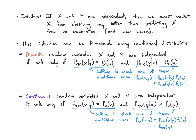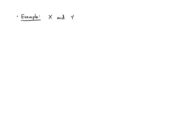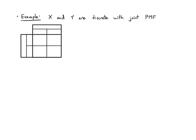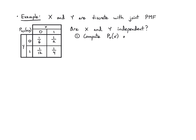Let's do an example. We have discrete random variables X and Y with a joint PMF table. X has values 0 and 1, Y has values 0 and 1, with entries one-sixth, one-half, one-twelfth, and one-fourth. The question is: are X and Y independent? We'll check this by computing the marginal PMFs of X and Y, then checking whether the joint PMF can be written as the product of these marginals.